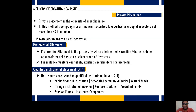In qualified institutional placement, shares are subscribed or purchased by qualified institutional buyers. According to SEBI, qualified institutional buyers include public financial institutions, scheduled commercial banks, mutual fund companies, pension fund companies, provident fund companies, foreign institutional investors, and insurance companies.